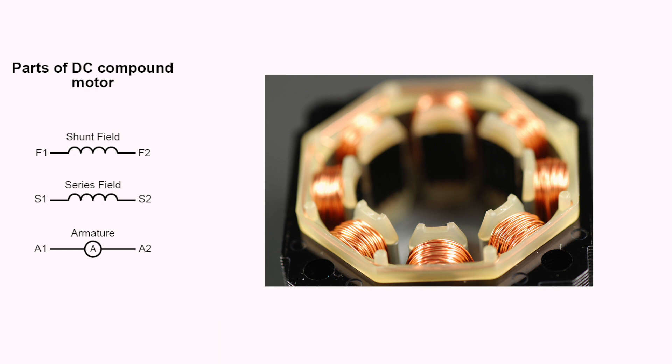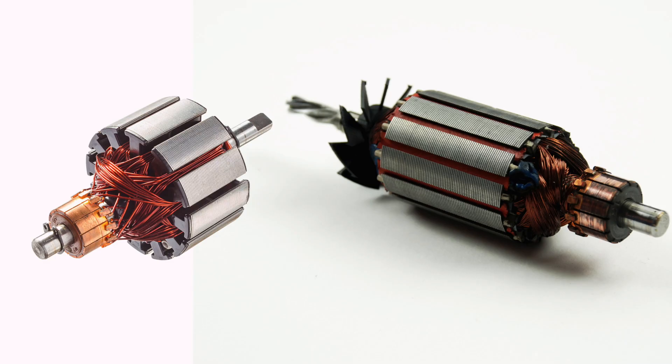For DC motors, the kind of field excitation is what distinguishes one type of DC motor from another. The type of armature has nothing to do with the motor classification. There are three general types of DC motor, and they are classified according to their field excitation. So, let's look at the different types.